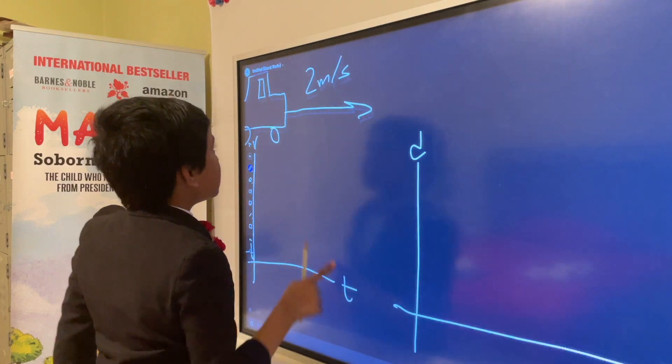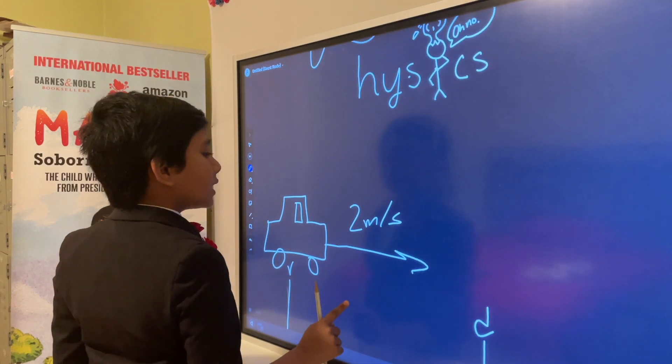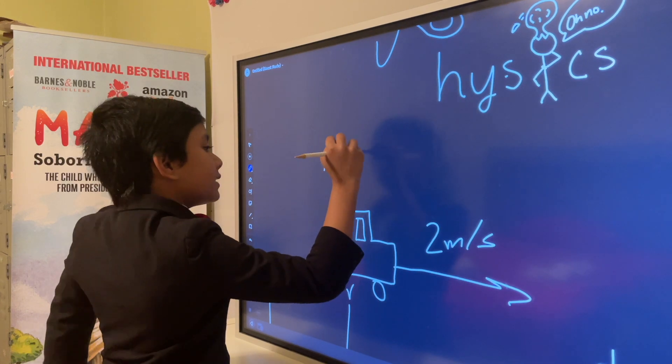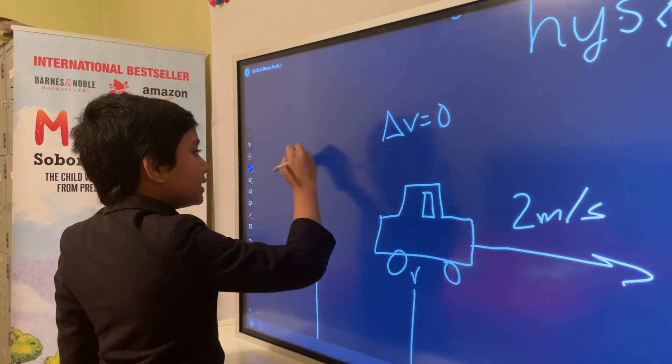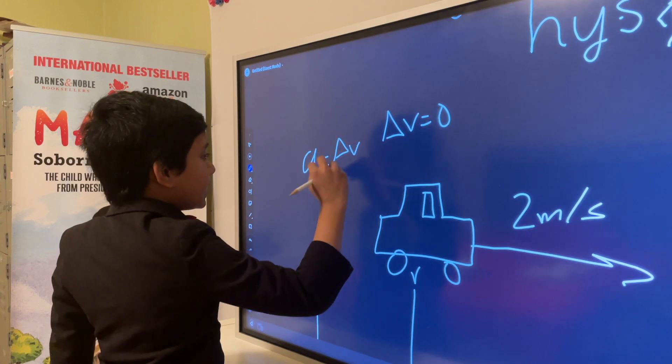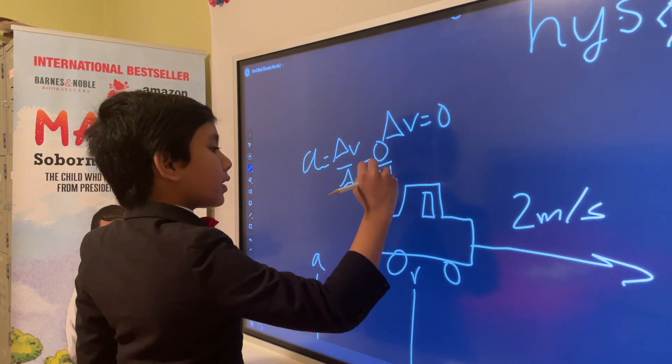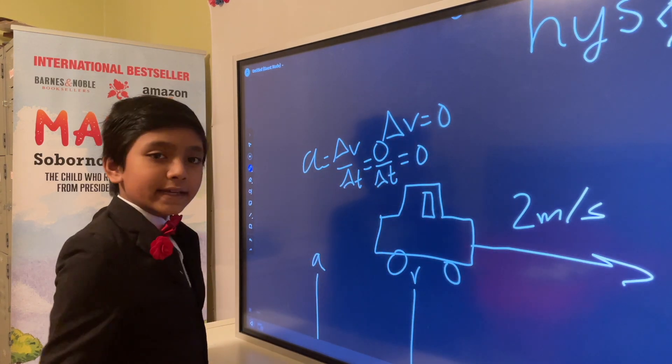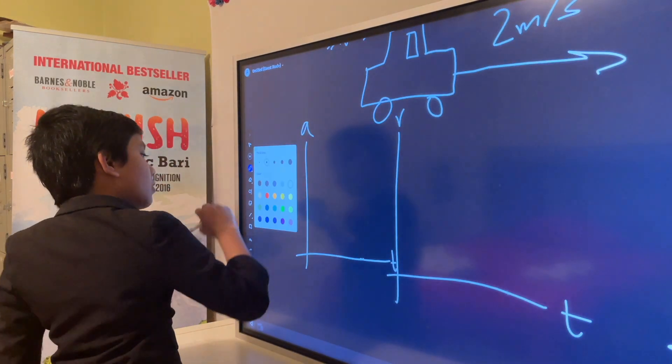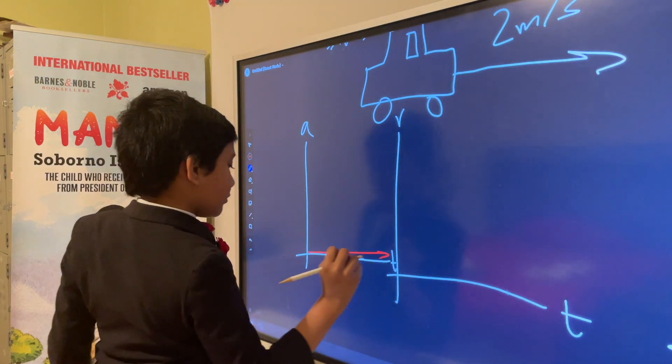This is constant velocity. If it's constant velocity, then the change in velocity is zero. Since acceleration is change in velocity over change of time, that means that the numerator is going to be zero, which always leads to acceleration being zero. So the acceleration graph isn't very interesting.